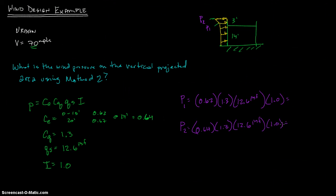I'm going to get my calculator and figure out what this is. 0.62 times 1.3 times 12.6 times 1, and this is going to be in PSF again, and that's 10.15, I'll call it 10.2 PSF. And up here it's going to be 0.64 times 1.3 times 12.6 times 1 which is 10.48 rounding up, 10.5 PSF. Does that make sense? Yes, because it's getting a little bit larger right there.